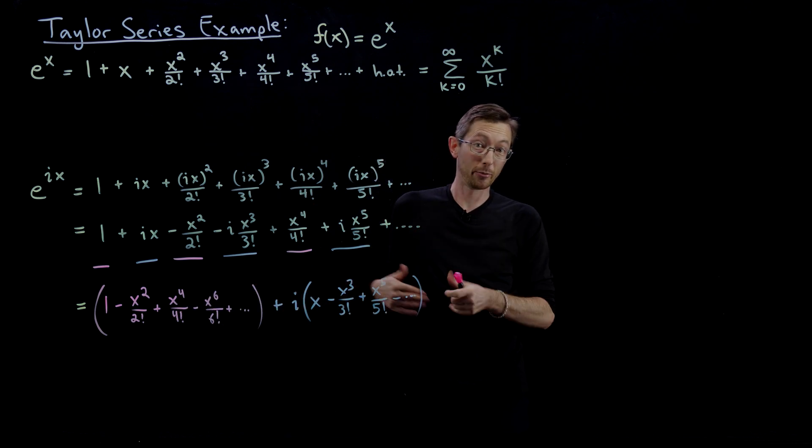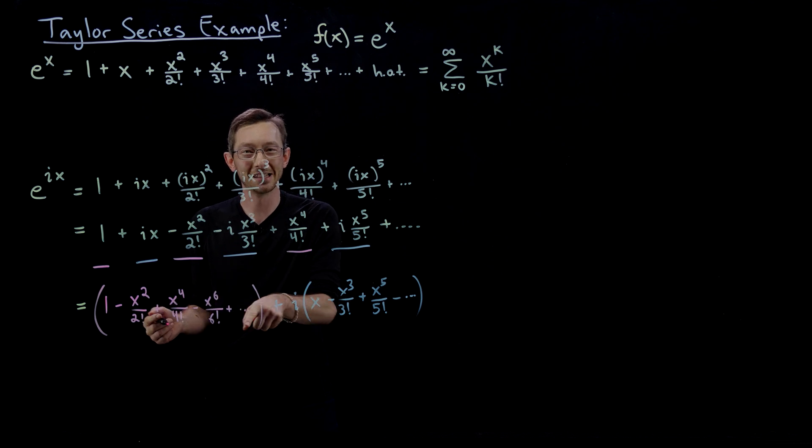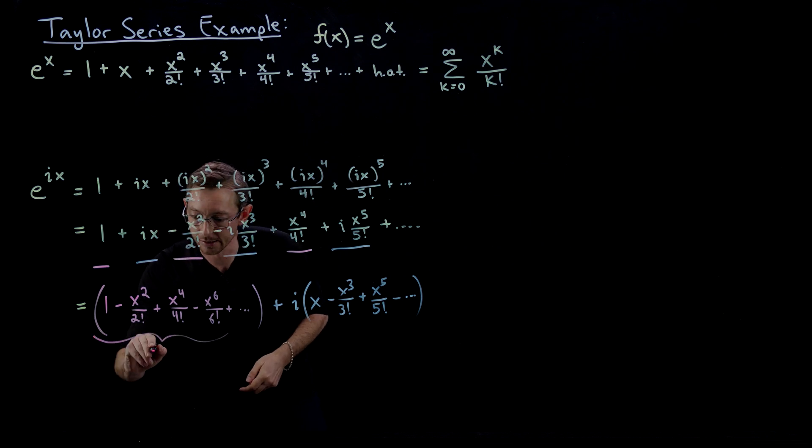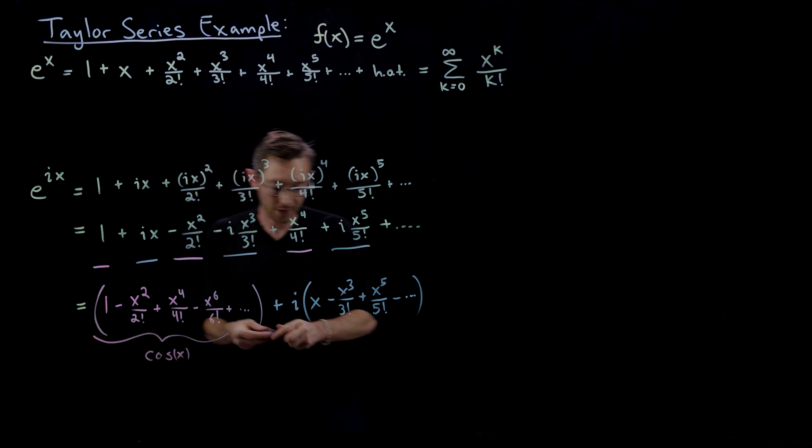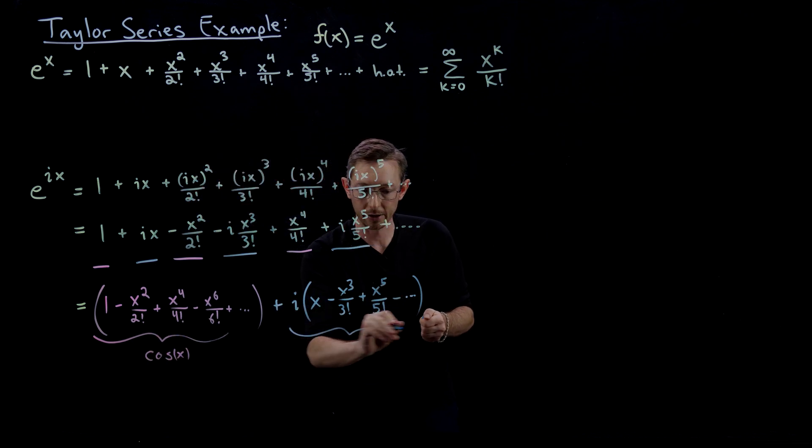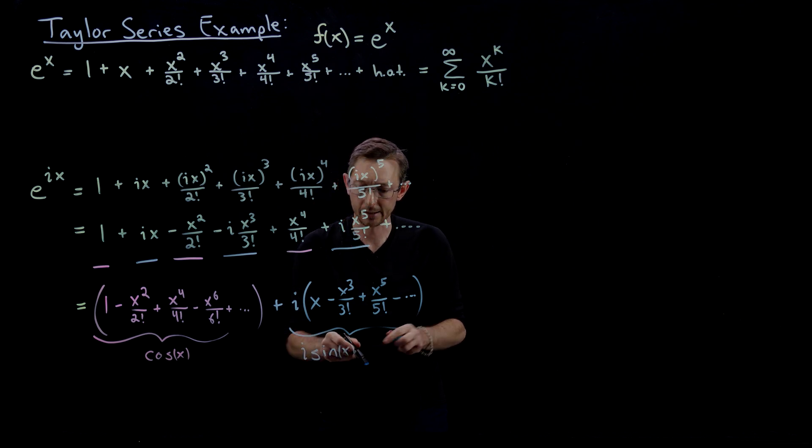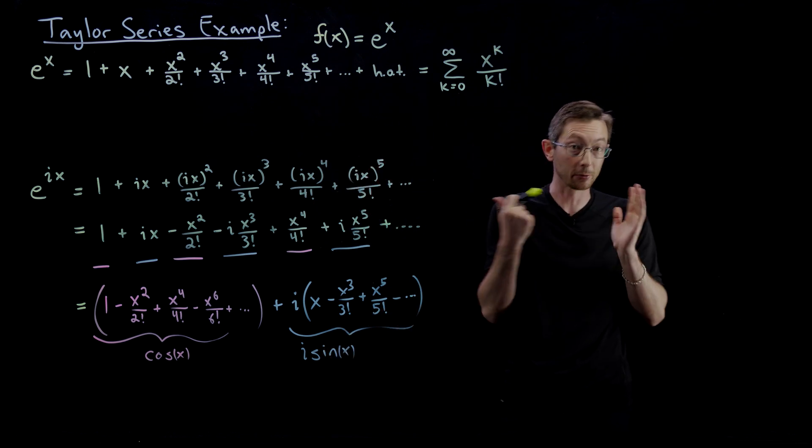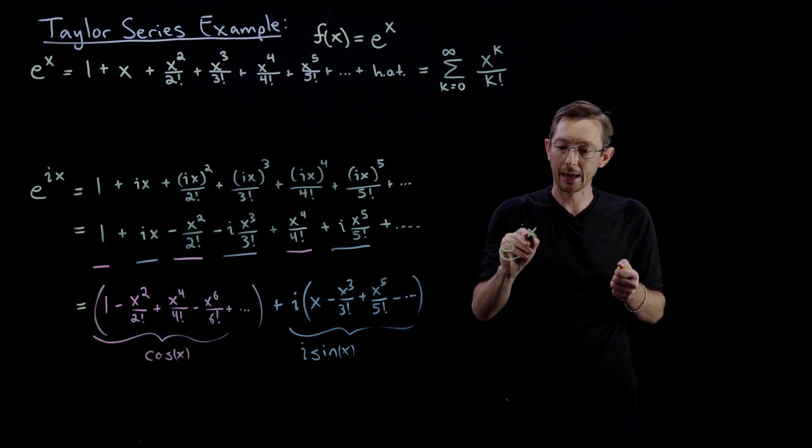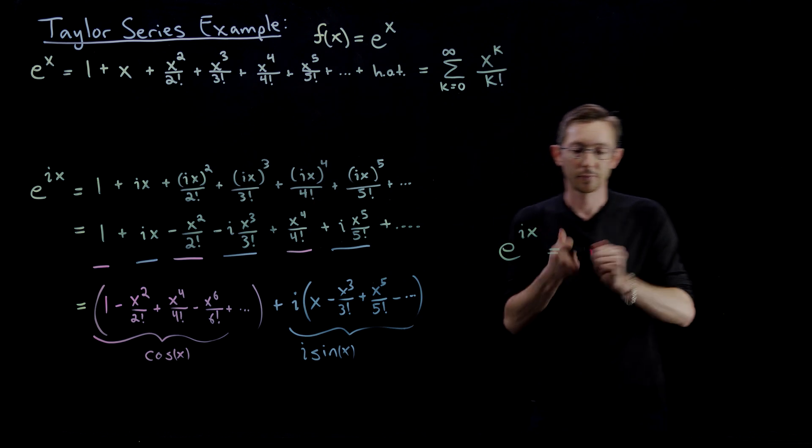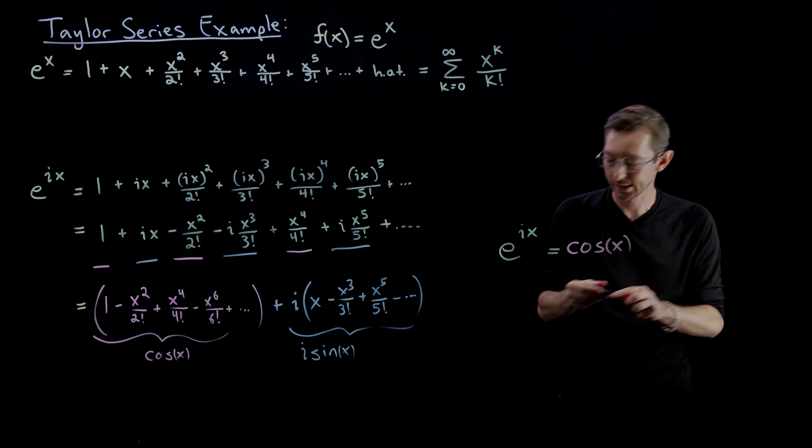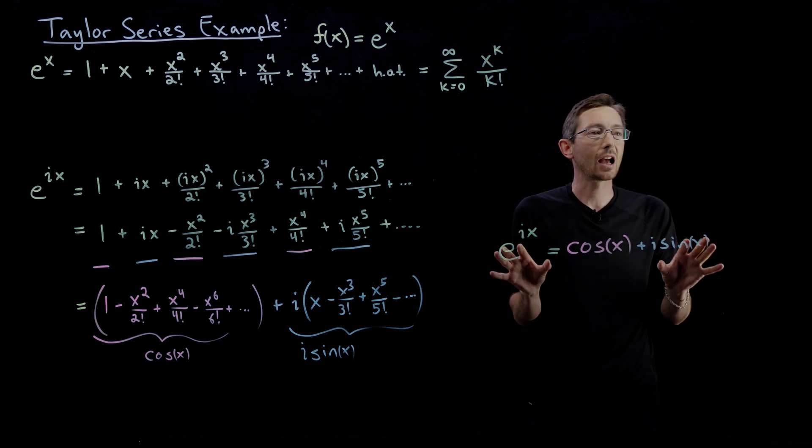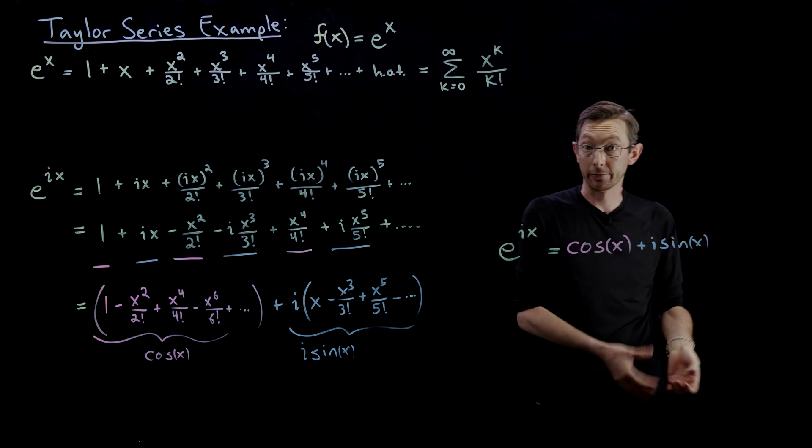Here's where it gets really interesting. You should recognize from the previous lecture: this is the Taylor series for cosine, and this is the Taylor series for sine. So this literally equals cos(x) and this whole thing with the i is i·sin(x). This is Euler's formula, one of the most important formulas in all of math. It's a really beautiful formula: e^(ix) = cos(x) + i·sin(x).